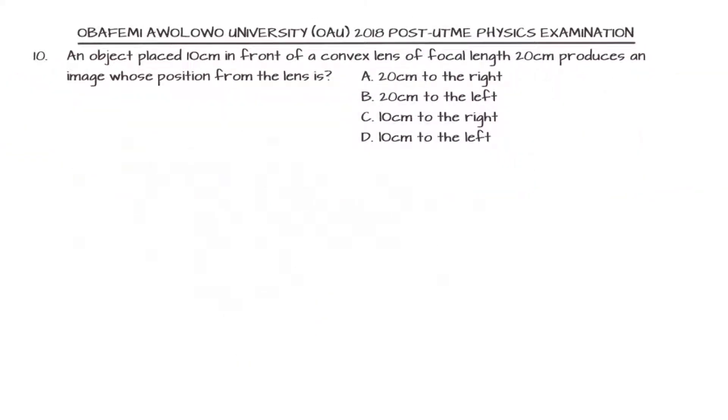In this question we are told that an object placed 10 centimeters in front of a convex lens of focal length 20 centimeters. Focal length f is 20 centimeters and object distance u is 10 centimeters. We are to find where the image is going to be formed. From the question we can get u to be 10 centimeters and f to be 20 centimeters. We are looking for the position v.